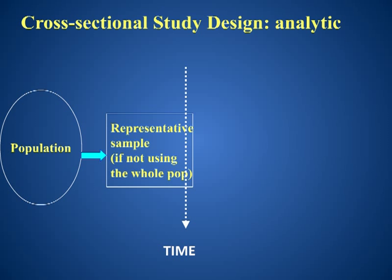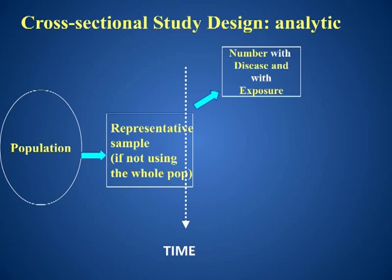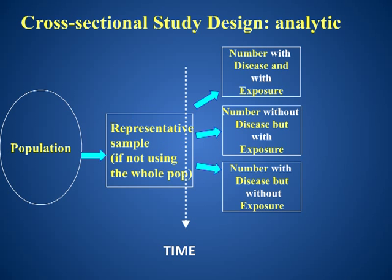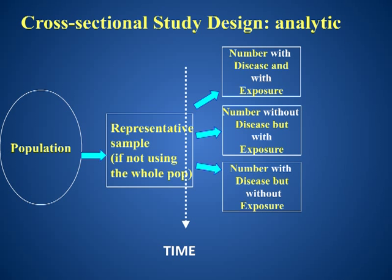Those with disease and with exposure are categorized in the first section. Those without disease and with exposure are categorized in the second section. Those with disease but without exposure are categorized in the third section. The fourth section contains those without disease and without exposure.